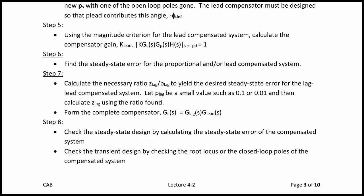Step 6: Find the steady-state error for the proportional and/or lead compensated system. Step 7: Calculate the ratio of Z_lag to P_lag to yield the desired steady-state error for the lag-lead compensated system. Let P_lag be a small value such as 0.1 or 0.01, then calculate Z_lag using that ratio to decrease the steady-state error. Finally, form the complete compensator: GC(s) = G_lag · G_lead. Step 8: Always check your work — verify the steady-state design by calculating the steady-state error, and check the transient design using the root locus or closed-loop poles for settling time or time to peak.